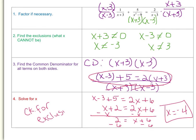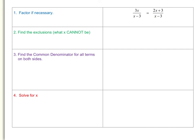Let's try another example: 3x over (x minus 3) equals (2x plus 3) over (x minus 3). The first thing we need to do is check whether we need to factor our denominators. Each denominator is x minus 3, so they do not need to be factored. Now let's find our exclusions. Setting x minus 3 not equal to 0 and adding 3 to both sides gives us x cannot equal positive 3. Since both denominators are x minus 3, we have just this one exclusion.